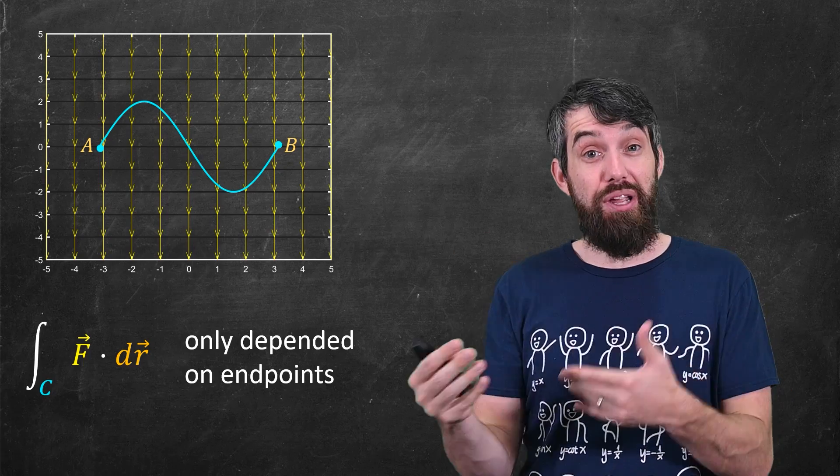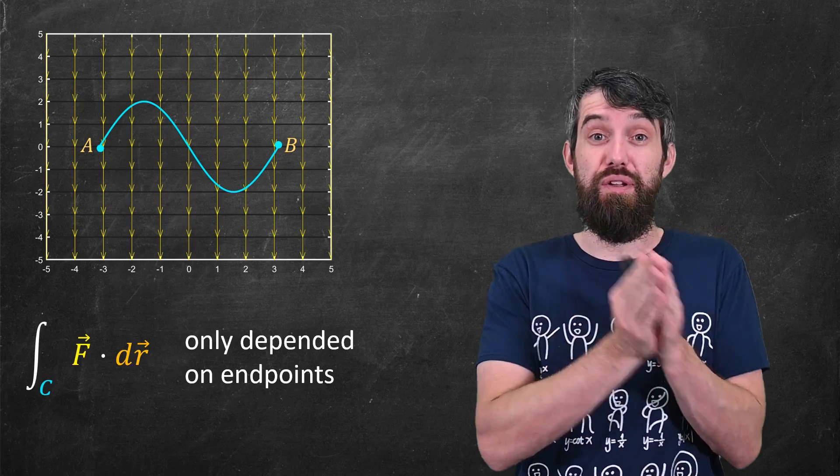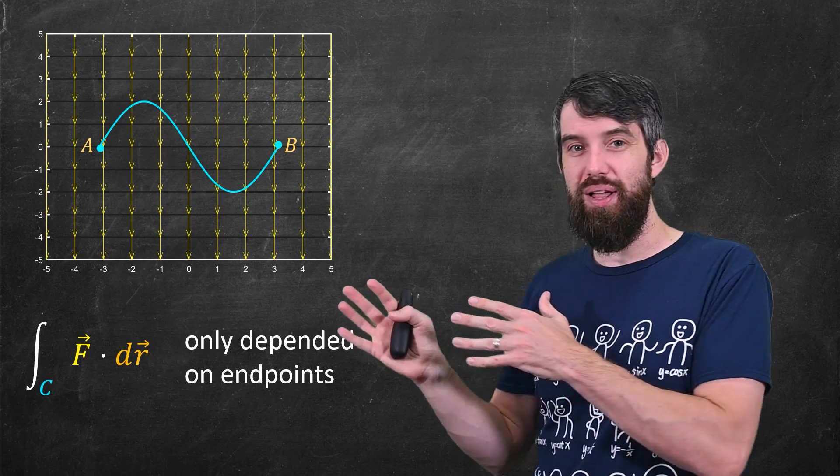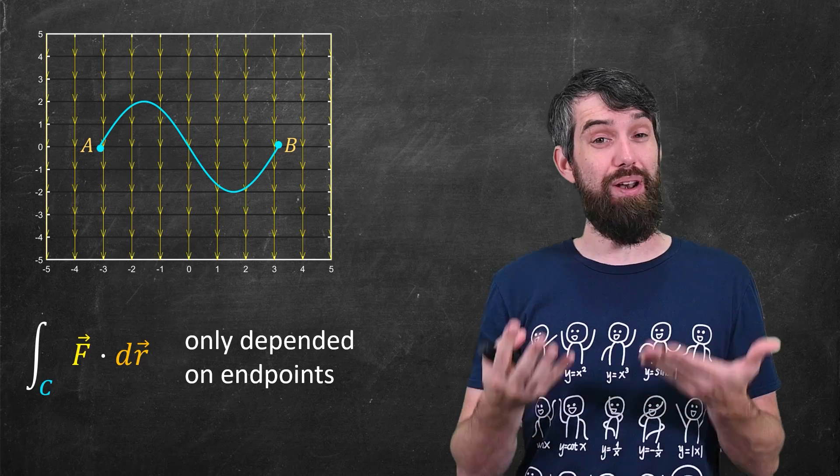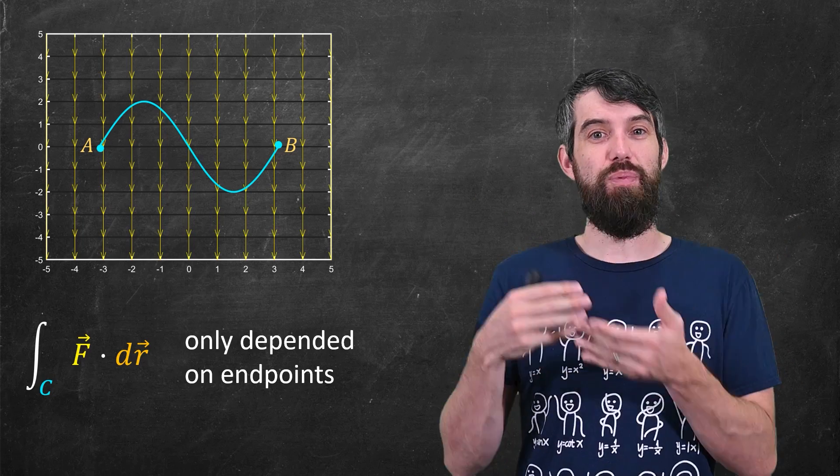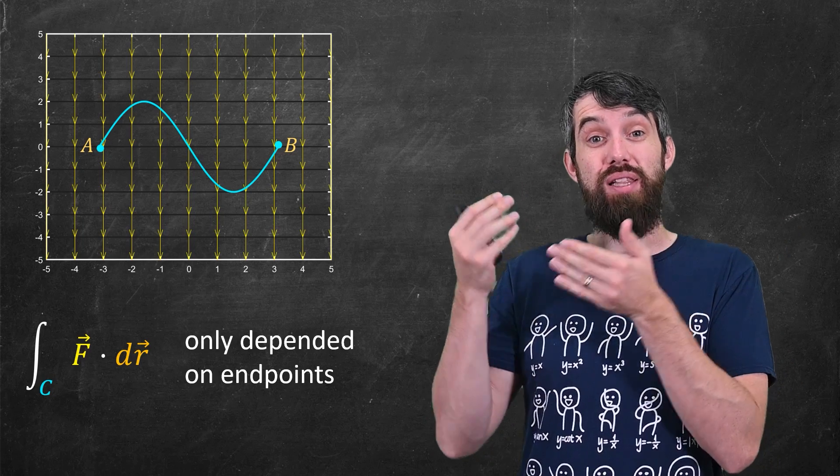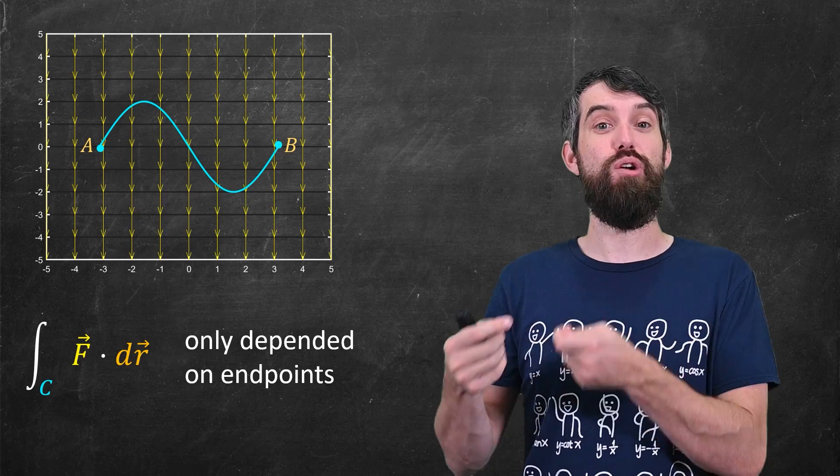Now in our previous video on conservative vector fields we saw this example. This field was a model for gravity because it was just pointing straight down and we had some path, but in fact we could take many paths and we saw in that video that the line integral, the one that represented work,